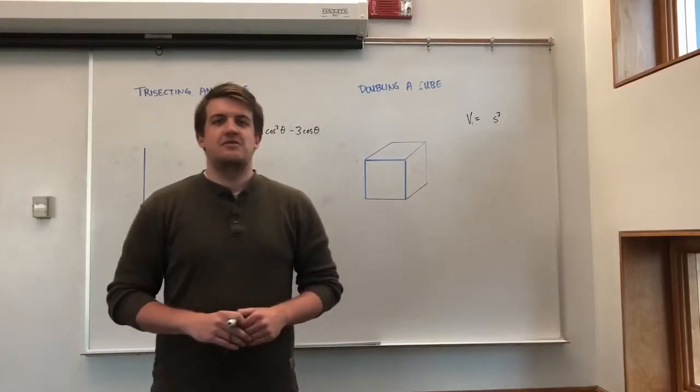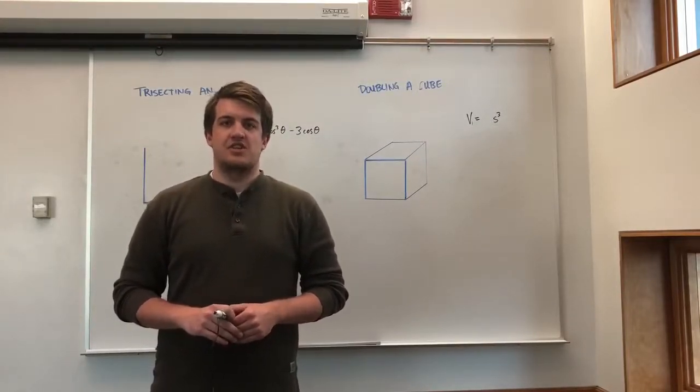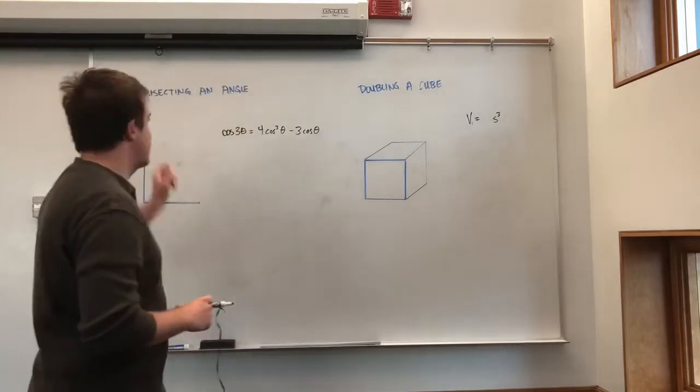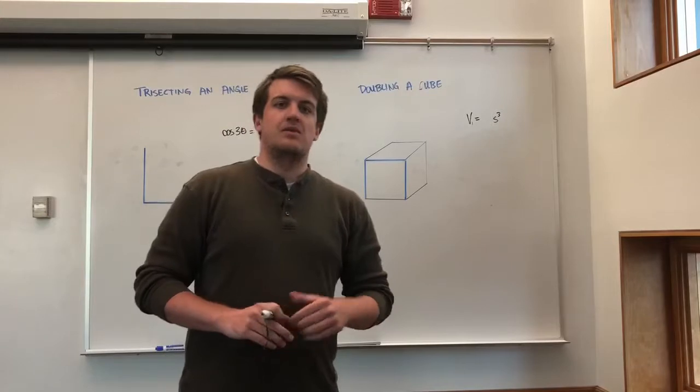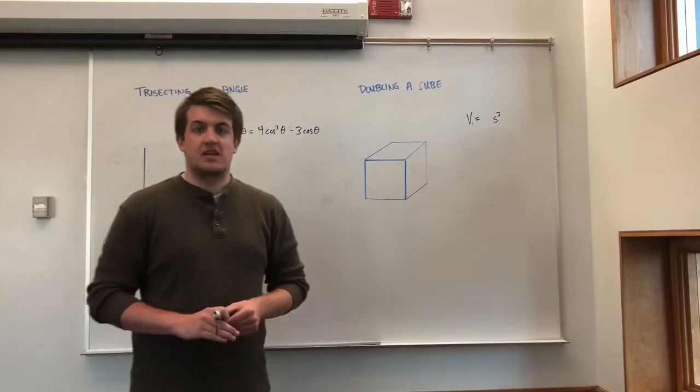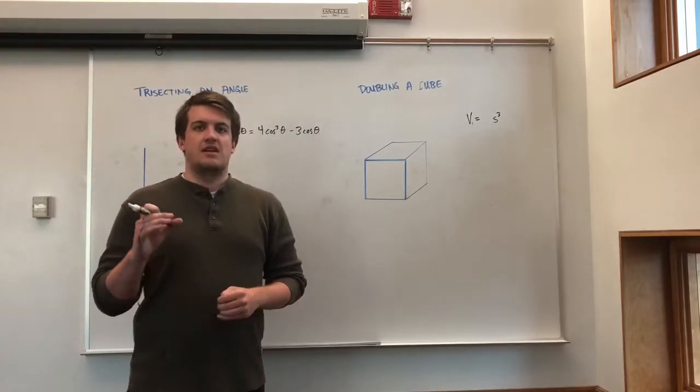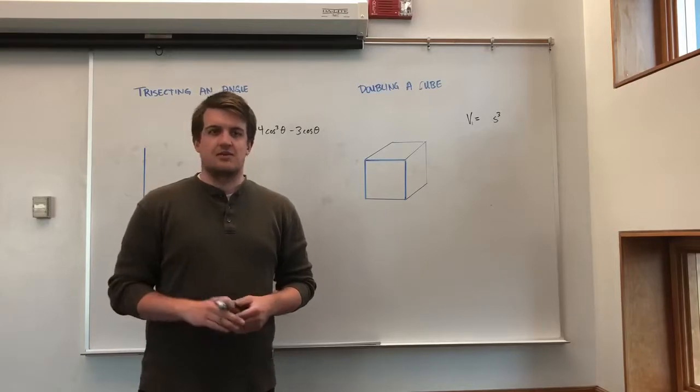In this video, we will examine two famous problems in construction geometry. The first being trisecting an angle, and the second being doubling a cube. We will disprove both cases by forming a contradiction with the definition of a constructible number.